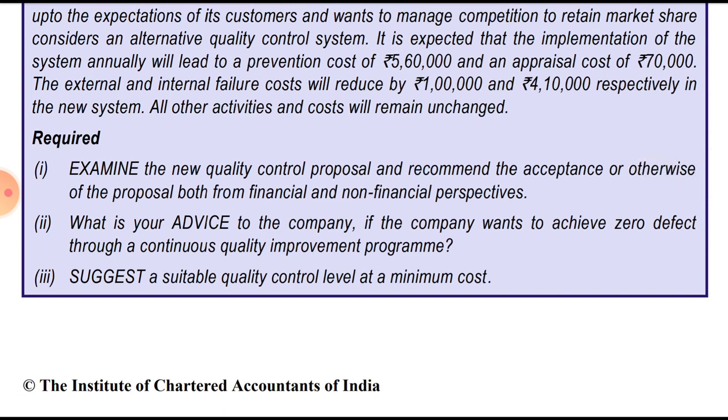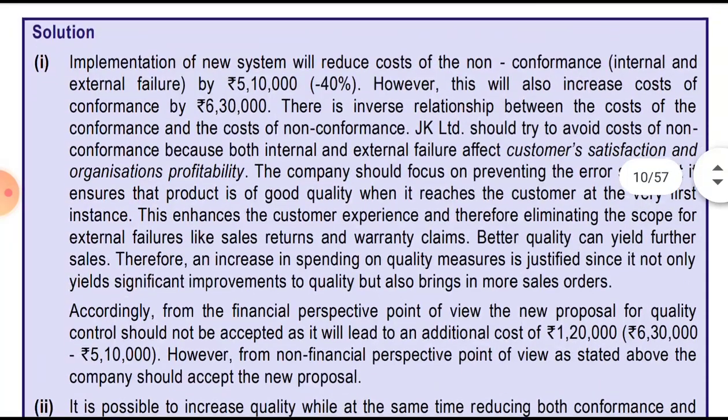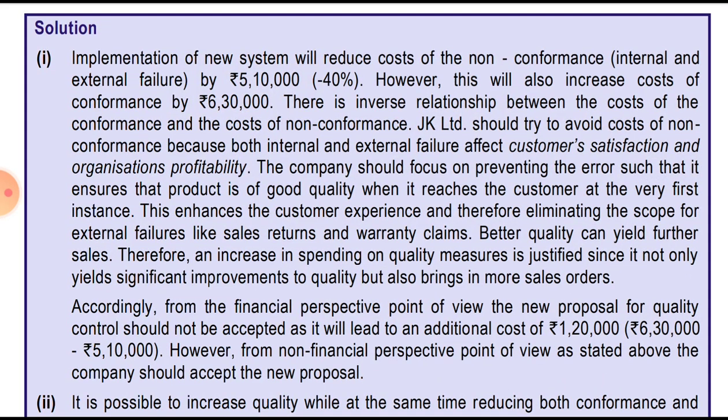Required part one: Examine the new quality control proposal and recommend acceptance or otherwise, both from the financial and non-financial perspective. Implementation of the new system will reduce the cost of non-conformance — that is internal and external failure — by $5,10,000. However, it will also increase the cost of conformance by $6,30,000. There is an inverse relationship between the cost of conformance and the cost of non-conformance.